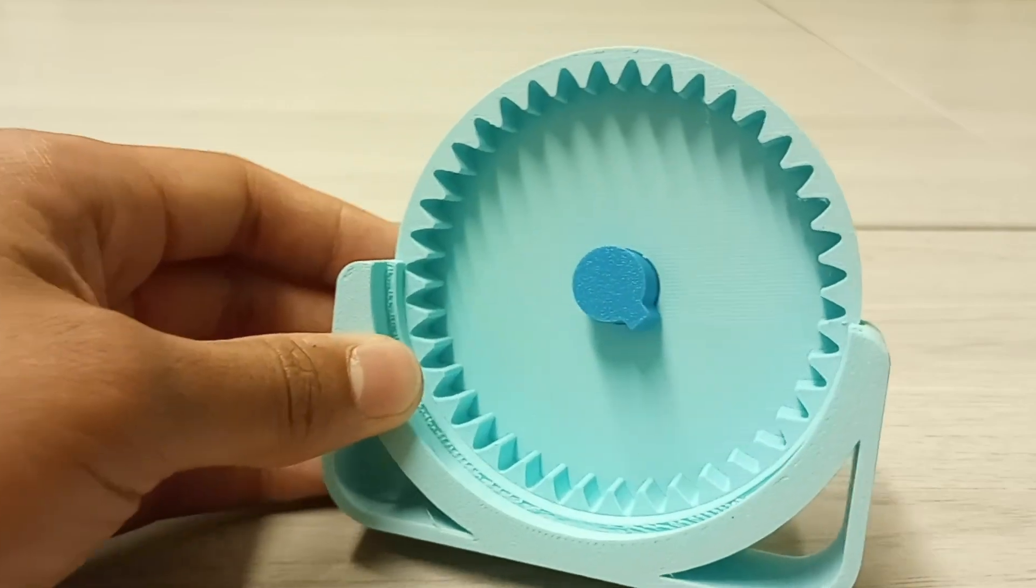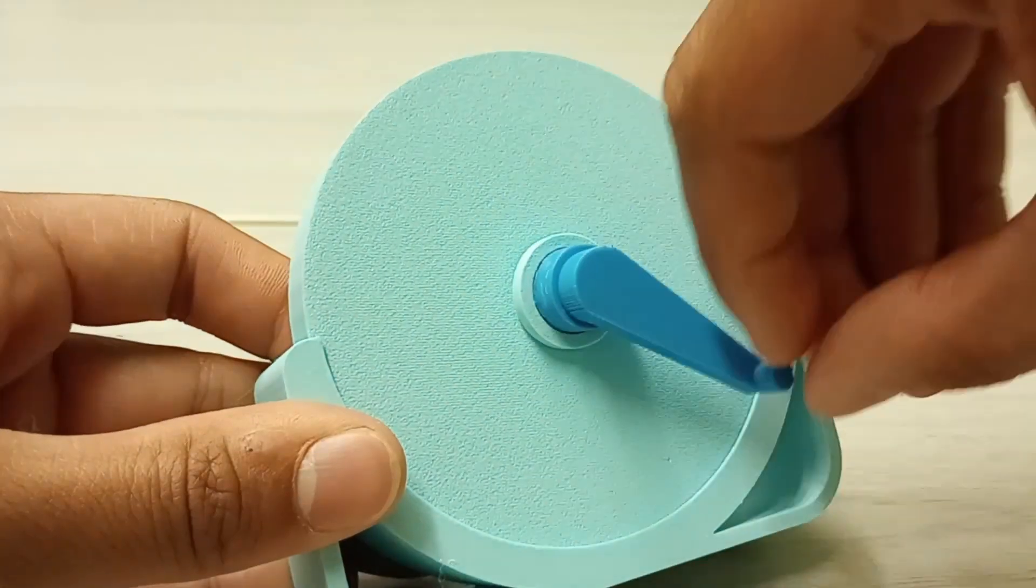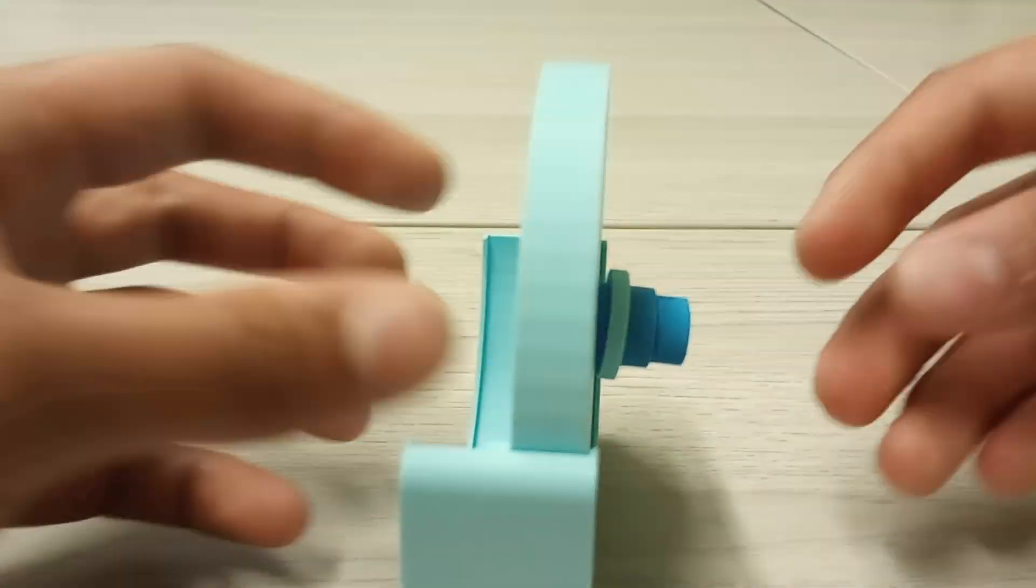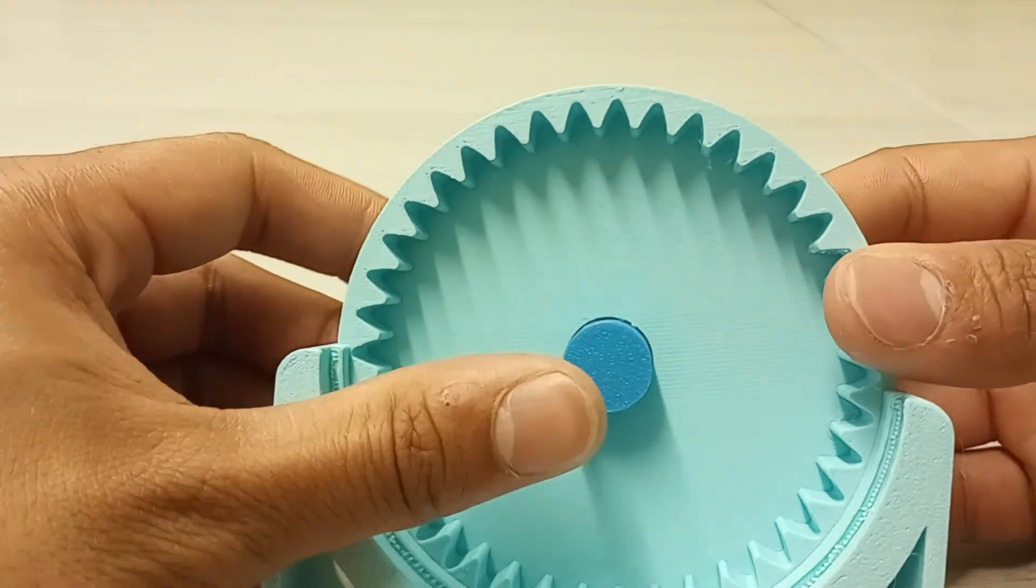So it all starts with the source of power in the back here. The source of power will be my hand that is moving this crank around in a circular motion. That handle is connected to a shaft here and we'll call that shaft A.